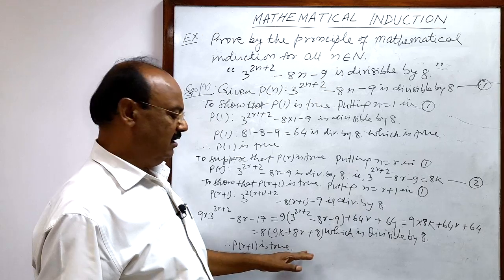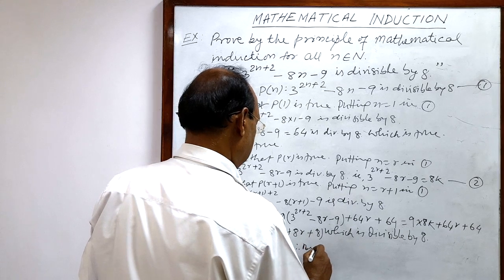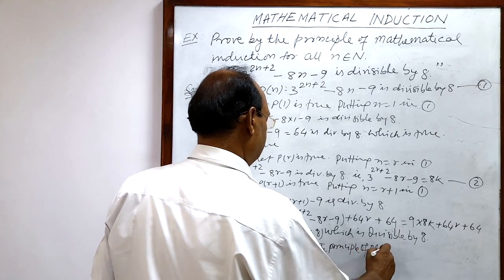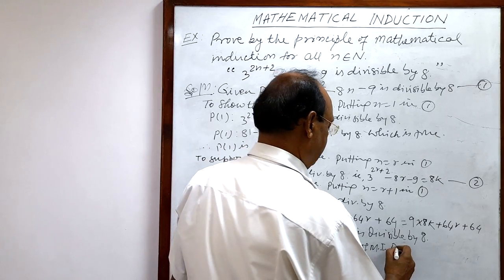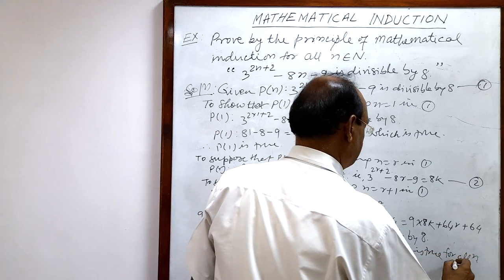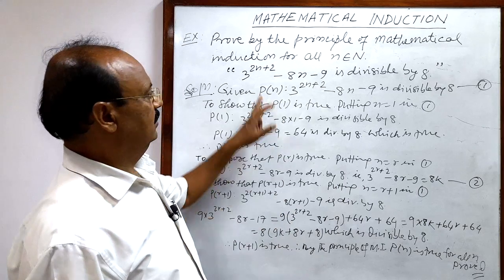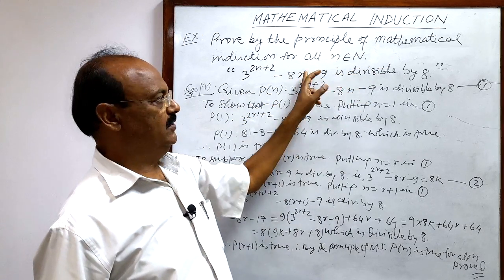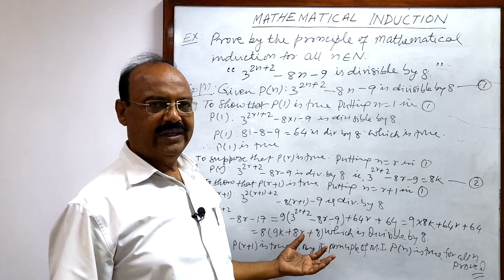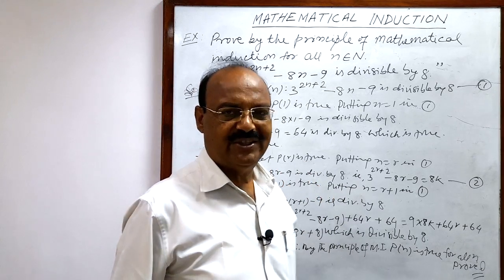Therefore, by the principle of mathematical induction, P(N) is true for all N. We have proved that 3 to the power 2n+2 minus 8n minus 9 is divisible by 8. Hope you have understood it well. I suggest you do some more practice to have a very good command of this topic. Thank you very much for watching this video.